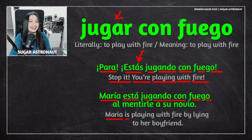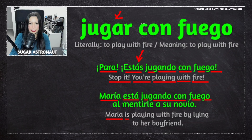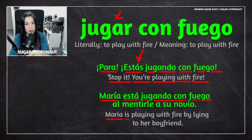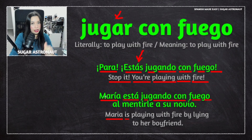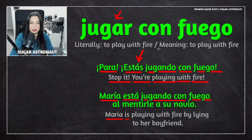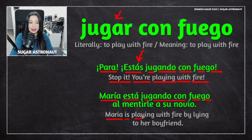The verb estar works really well with this phrase. Estoy jugando con fuego, estás jugando con fuego, están jugando con fuego. So remember, estar is a very good verb to use with this phrase. María está jugando con fuego — Maria is playing with fire.